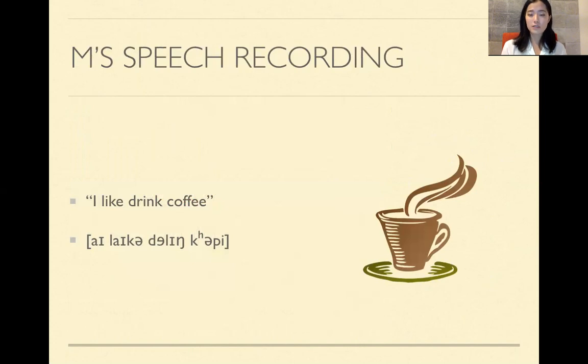So this is M's speech recording. 'I like drink coffee.' So she was actually instructed to just copy 'I like to drink coffee.' But in a very conversational setting, she just omitted 'to.' So 'I like drink coffee' is what she came up with. And you see a couple of differences here from E right off the bat that she does not have a clear /r/. She, in fact, replaced that with a light /l/. And then she also replaced /f/ with a /p/, 'coffee,' instead of 'coffee.'